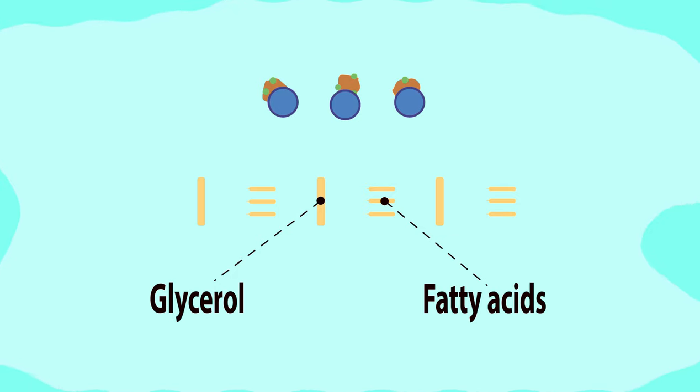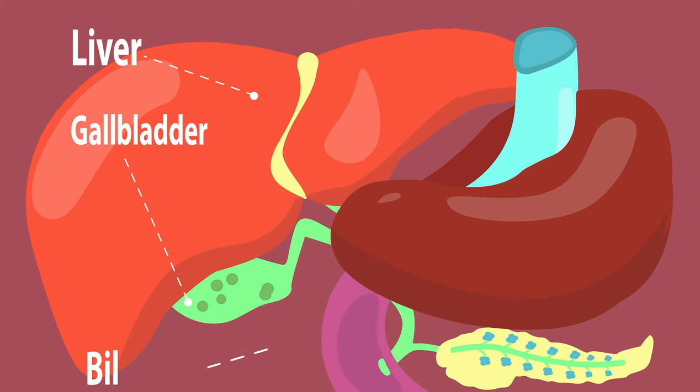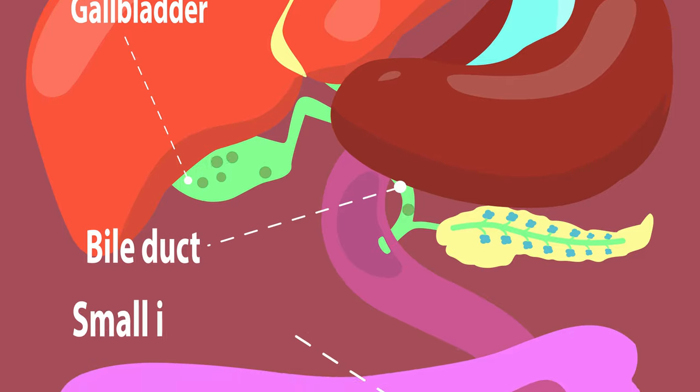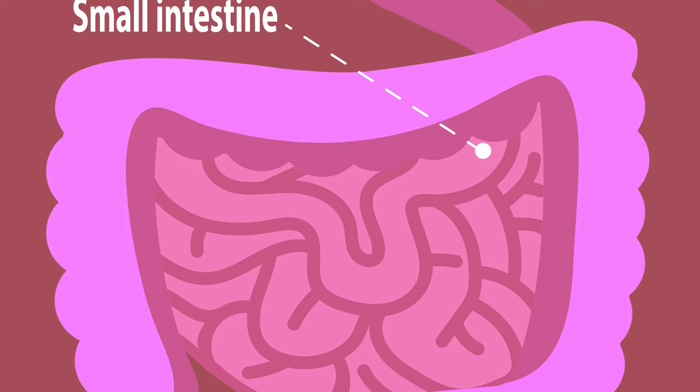The bile is produced in the liver and stored in the gallbladder. It's released down the bile duct into the small intestine from the gallbladder. Not only does the bile increase the surface area of the lipids, it also has another great quality.